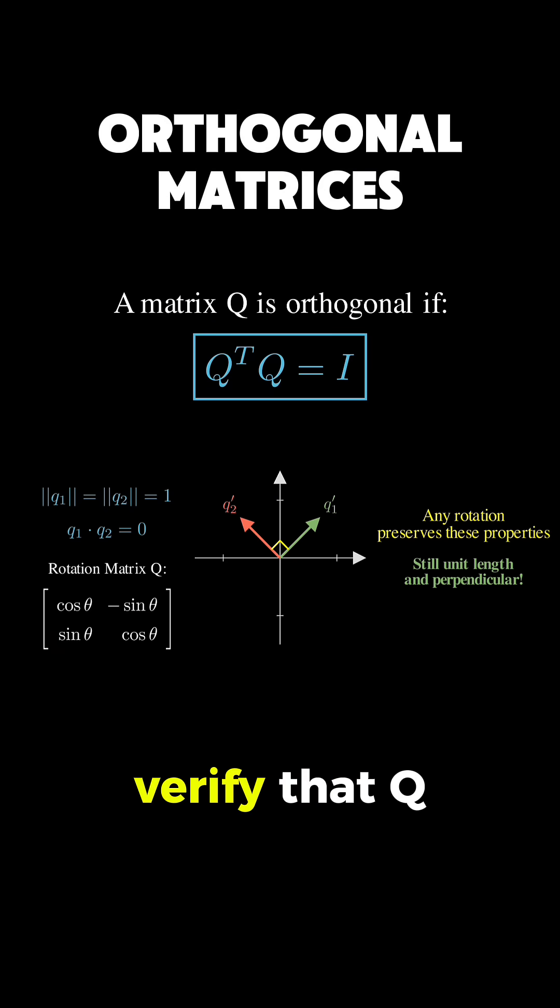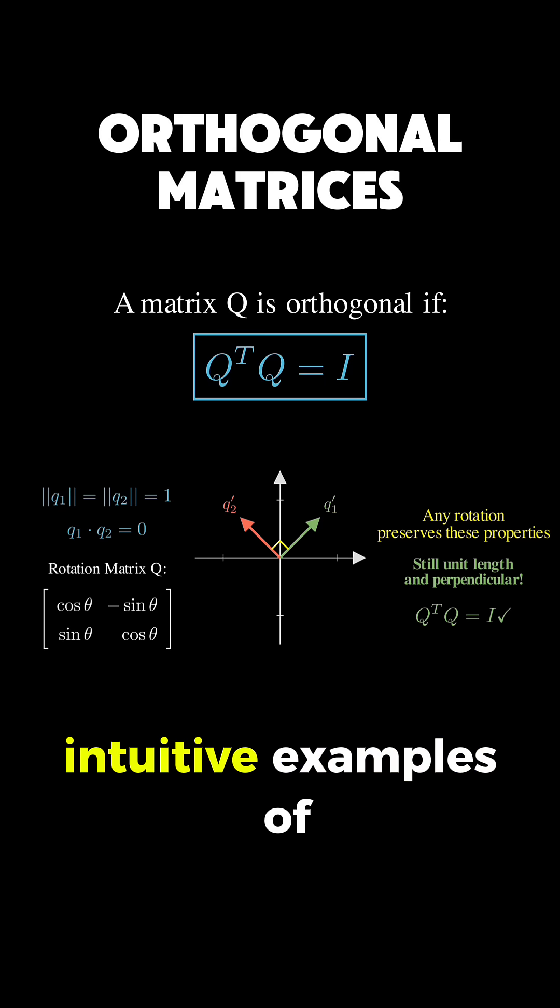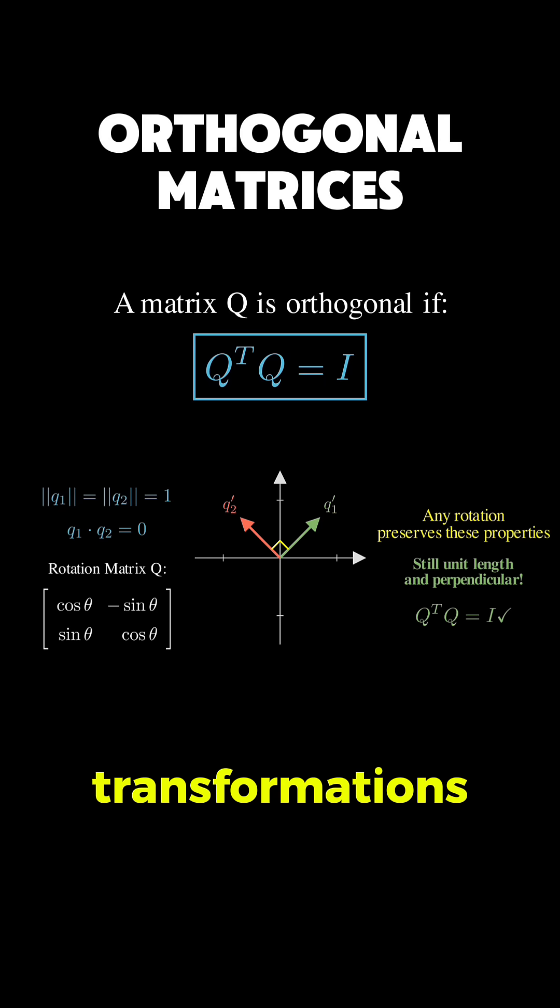And we can verify that. Q transpose Q does indeed equal the identity. Thus, any rotation matrix is orthogonal. And in fact, rotations are the most intuitive examples of orthogonal transformations.